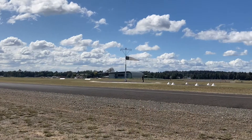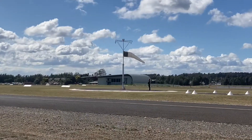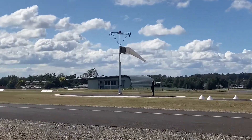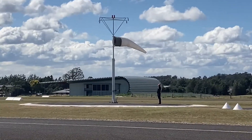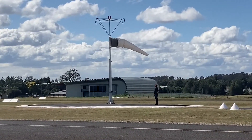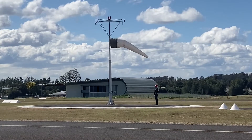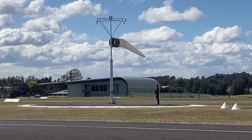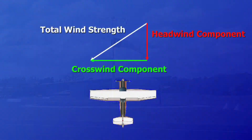Now we'll take a look at some simple ways to calculate what is known as the crosswind component. This means how much of the prevailing wind is headwind and how much is crosswind, as a kind of percentage.